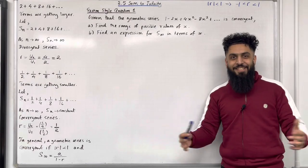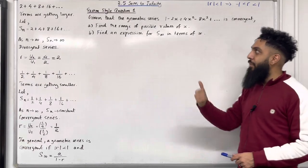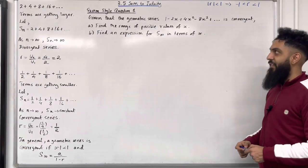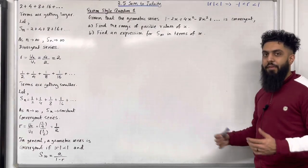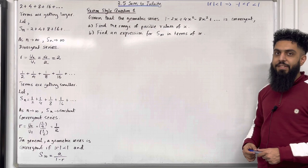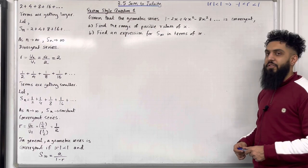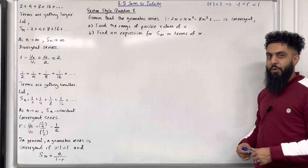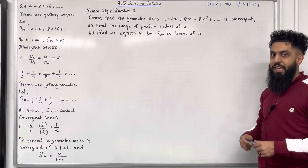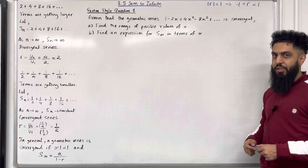Welcome back. In this teaching video I'll be looking at 3.5 Sum to Infinity. 3.5 represents chapter 3, section 5 of the Pearson A-level Maths Pure Maths Year 2 textbook. Let's go through the key facts of this section.